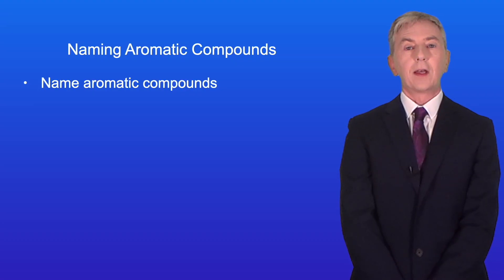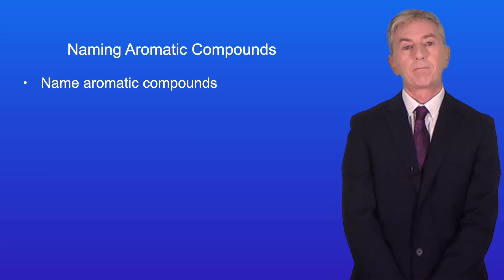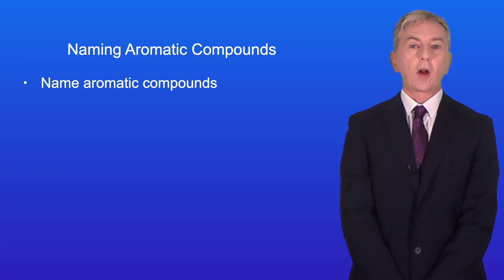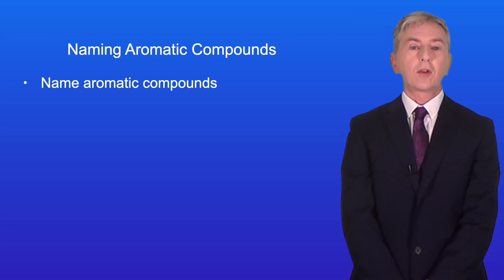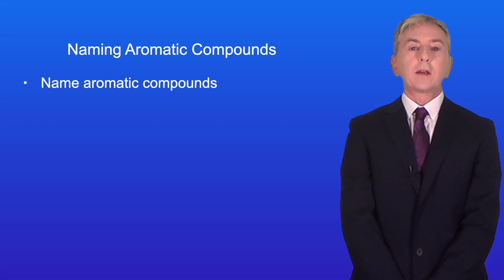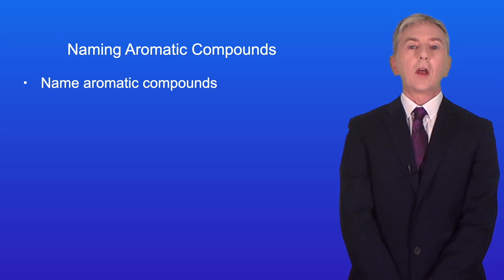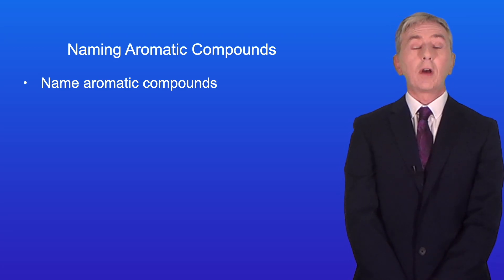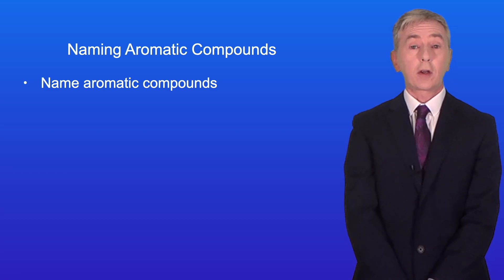Hi and welcome back to Free Science Lessons. By the end of this video you should be able to name aromatic compounds. Naming aromatic compounds simply involves following a set of rules that you need to learn. There are a very small number of exceptions to these rules which you also need to learn. Sometimes the same compound can have more than one acceptable name. Examiners know this, so they tend to choose relatively straightforward compounds and often accept several correct answers.